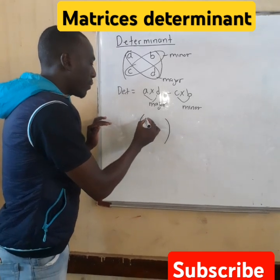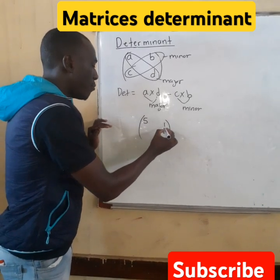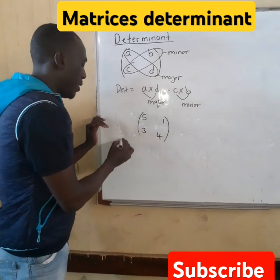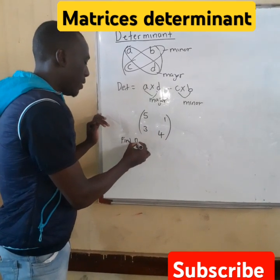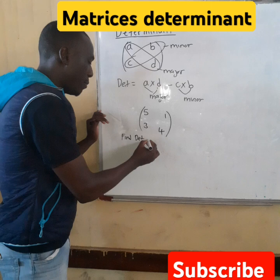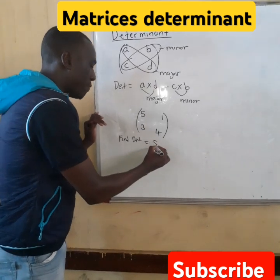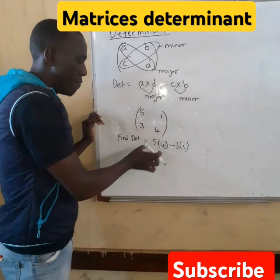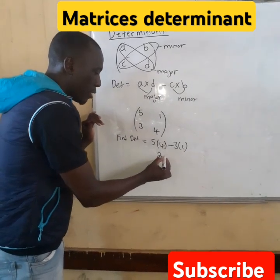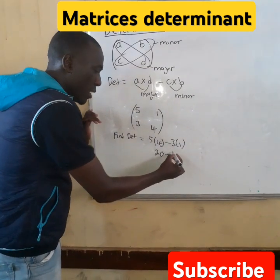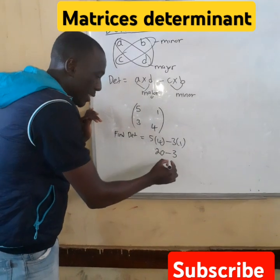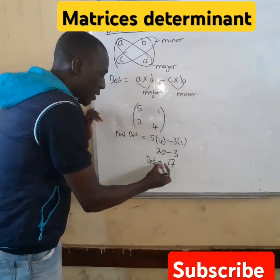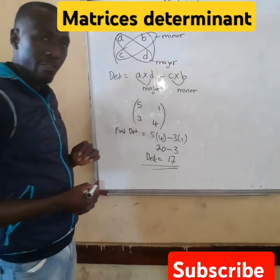Let's say this matrix is [5, 1, 3, 4]. Find the determinant. So, determinant is equal to 5 times 4 minus 3 times 1. 5 times 4 you get 20, minus 3 times 1 you get 3. So, 20 minus 3, you get 17. Our determinant is equal to 17.